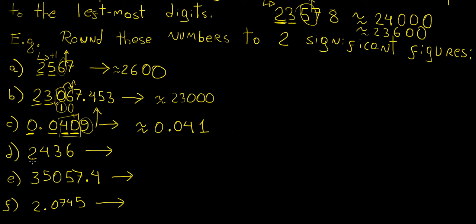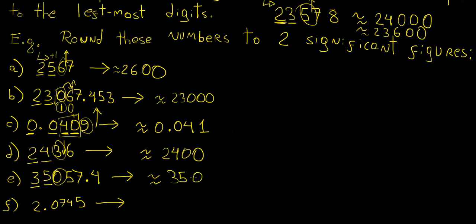The next example is straightforward: we grab the first two significant digits and check the next one. It is closer to 0, so we round down, giving approximately 2,400. For the following number, the digit immediately after the two significant figures is 0, so we round down and everything to the right becomes zero, giving 35,000.